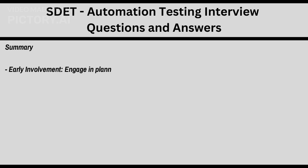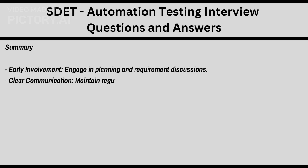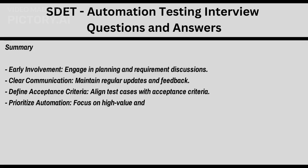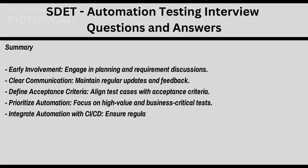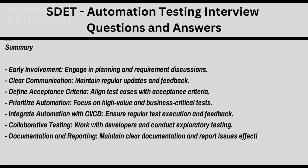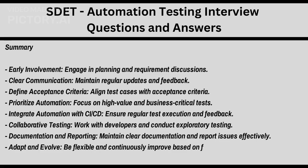Summary: early involvement — engage in planning and requirement discussions. Clear communication — maintain regular updates and feedback. Define acceptance criteria — align test cases with acceptance criteria. Prioritize automation — focus on high-value and business-critical tests. Integrate automation with CI/CD — ensure regular test execution and feedback. Collaborative testing — work with developers and conduct exploratory testing. Documentation and reporting — maintain clear documentation and report issues effectively. Adapt and evolve — be flexible and continuously improve based on feedback.